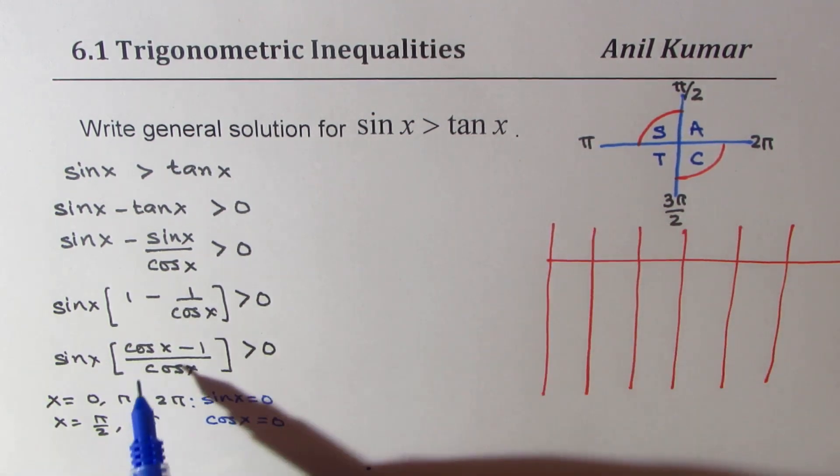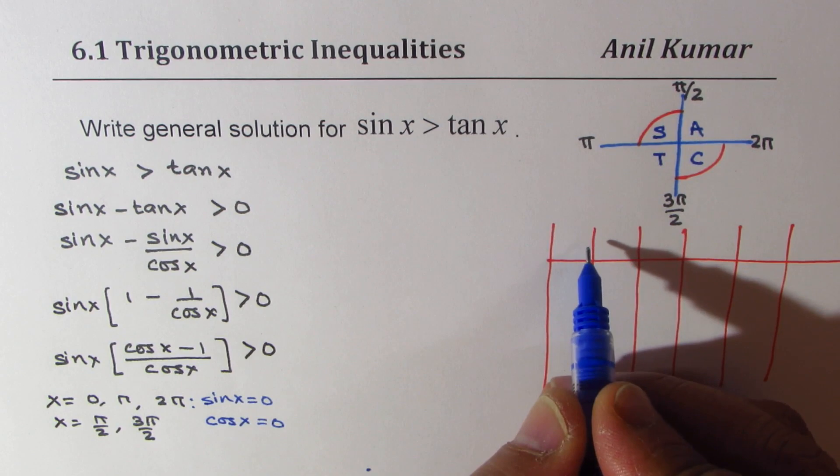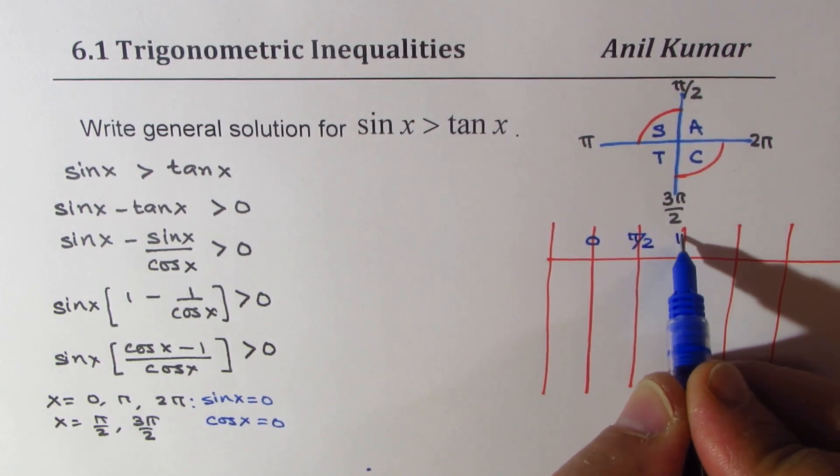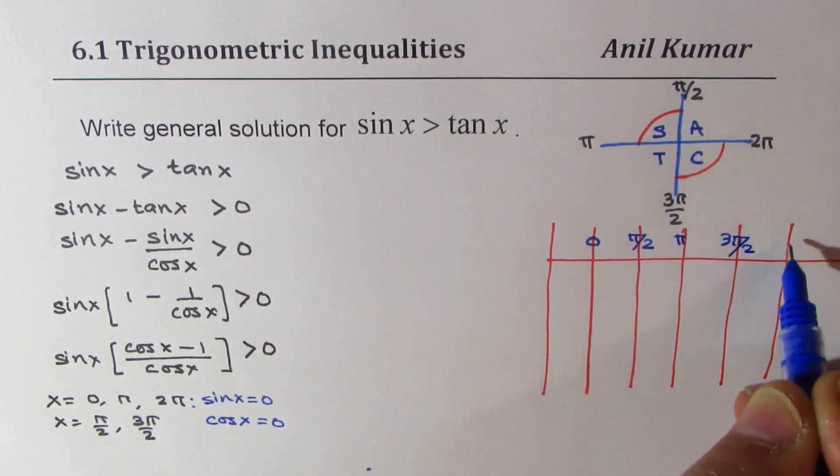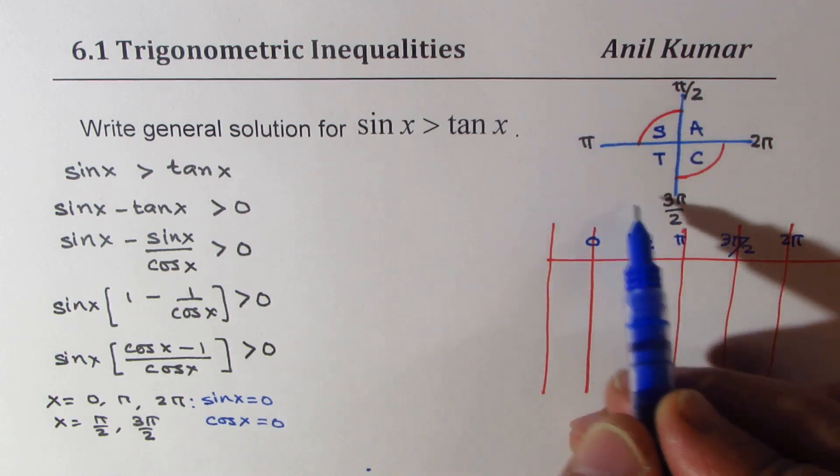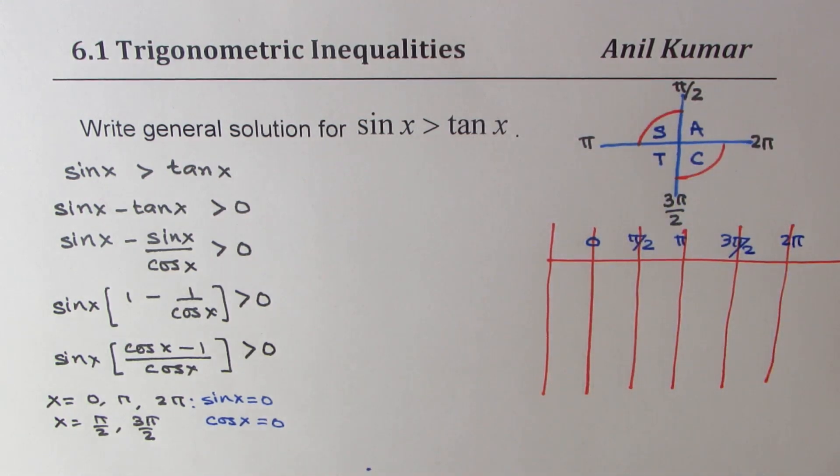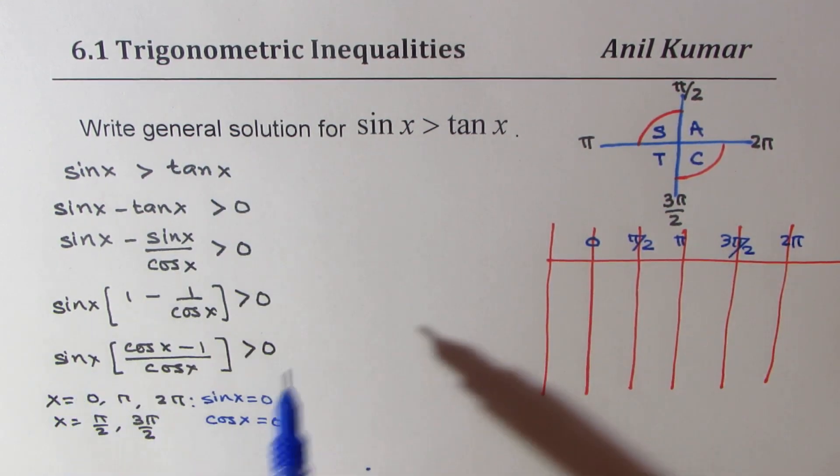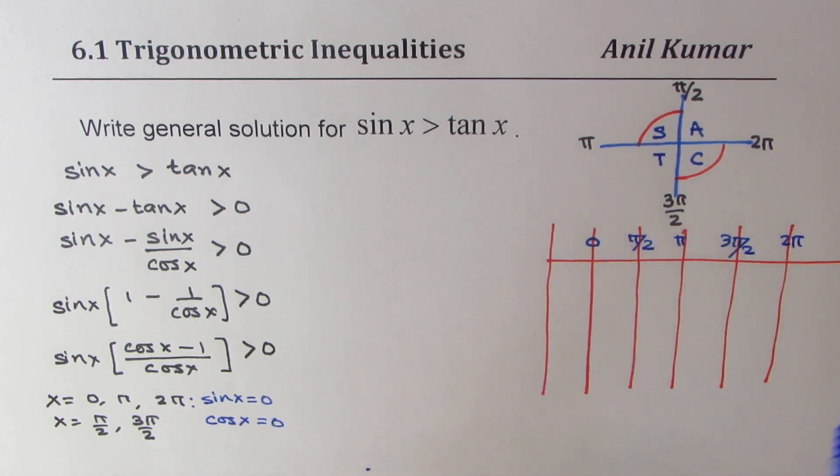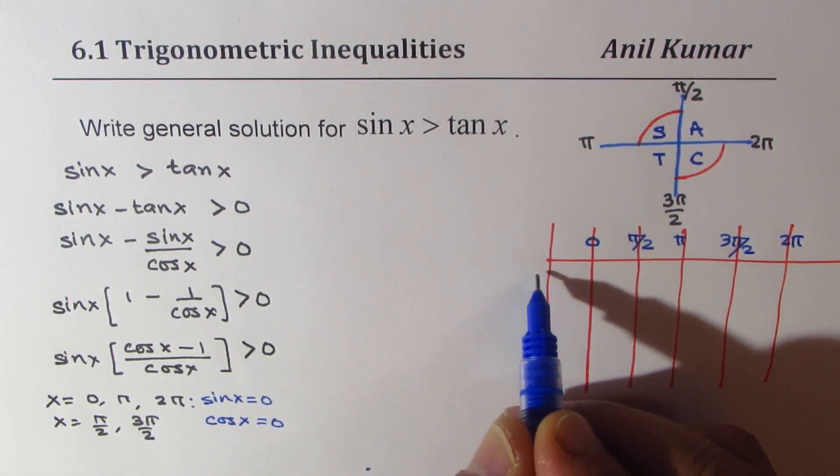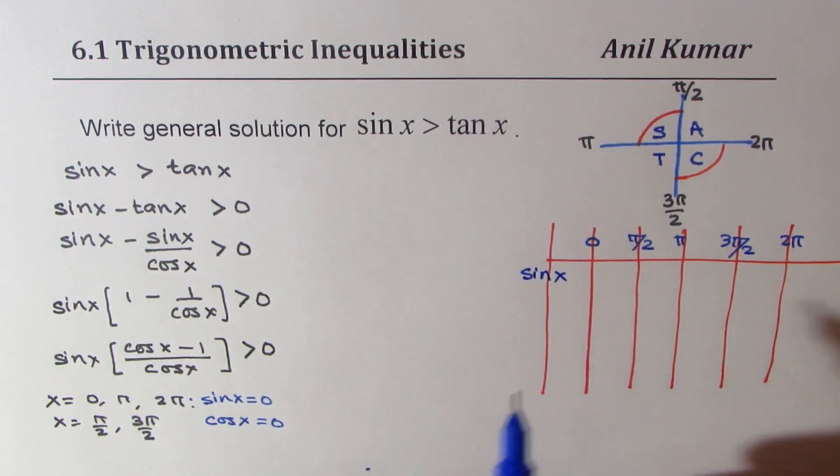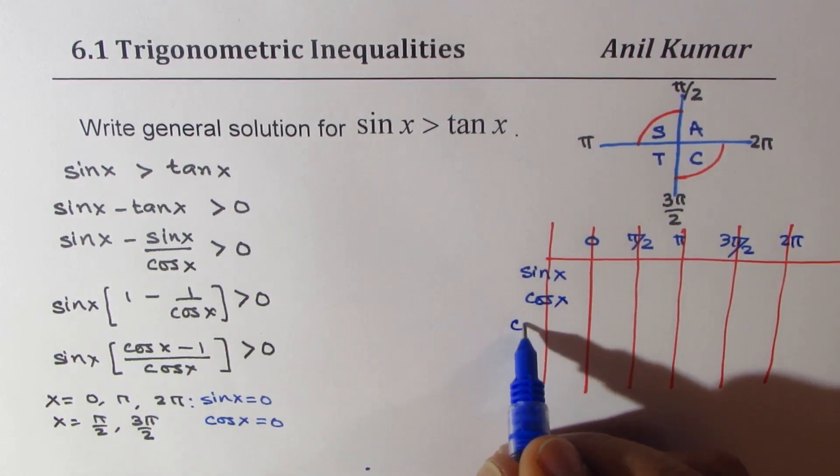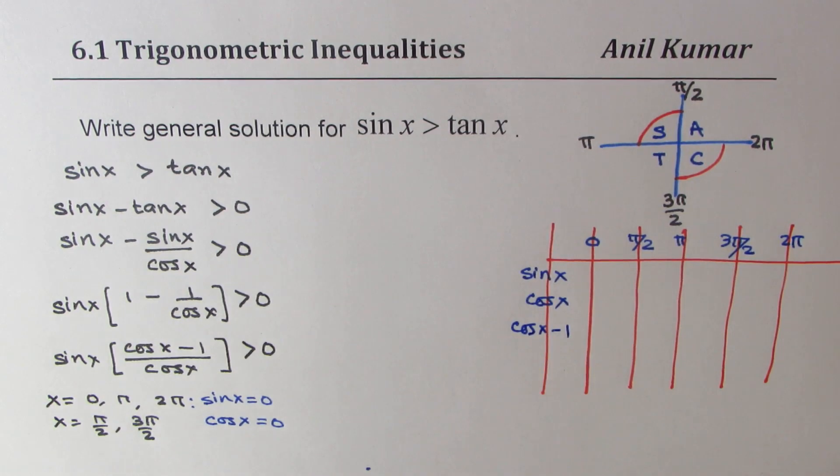So we have 0s or discontinuities at x equals to 0, at x equals to pi by 2, at pi, 3 pi by 2, and 2 pi. We know it's periodic, so we could always add 2 pi to our solution to get general solution. The factors which we are looking into are sin x, cos x, and cos x minus 1. These are the three factors.